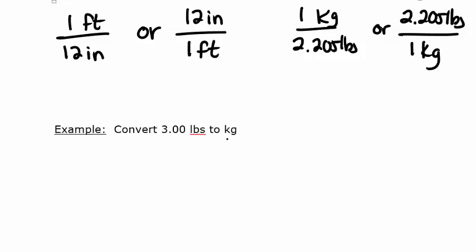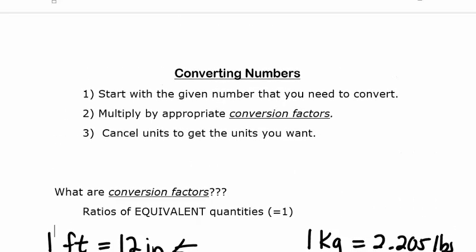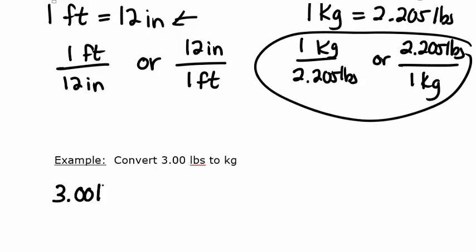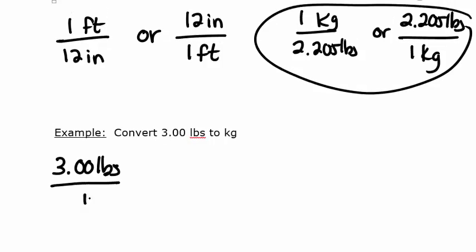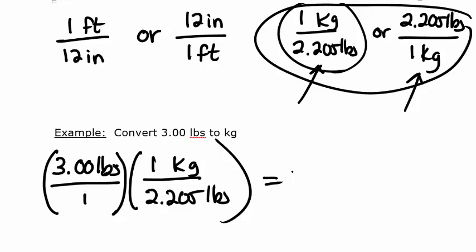Let's convert 3 pounds to kilograms. We start with the given number, 3 pounds, and put it over 1. Then we choose the conversion factor that cancels the units we don't want. We want to cancel pounds, so we put pounds on the bottom: one kilogram per 2.205 pounds. Then we cancel pounds divided by pounds, which equals one.